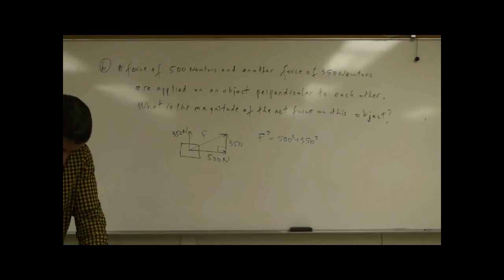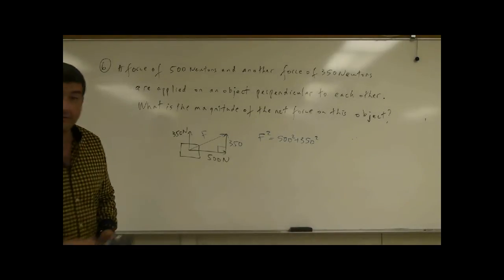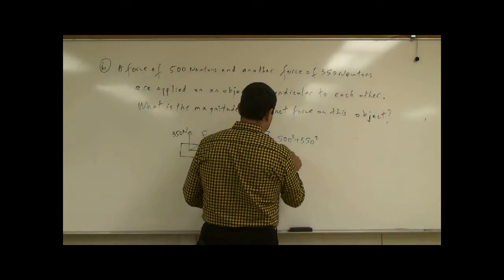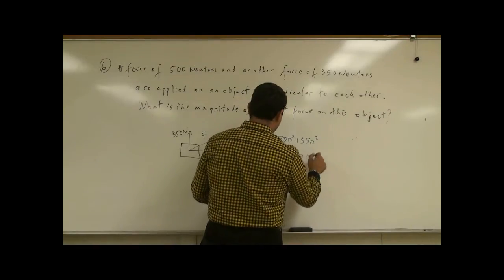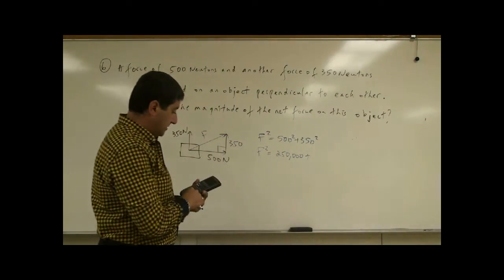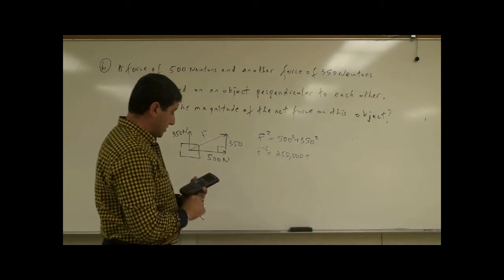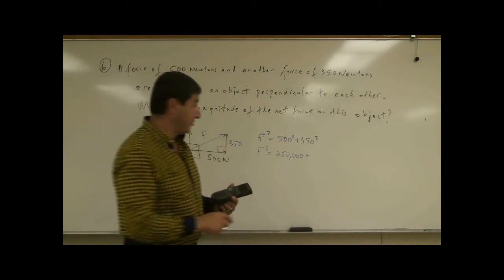500 squared is going to be 250,000, plus 350 squared is going to be 122,500.